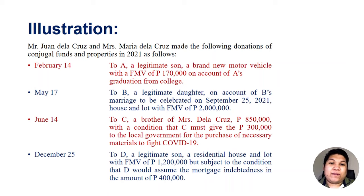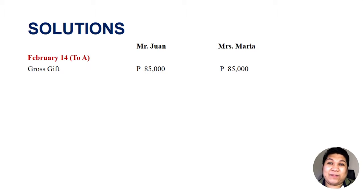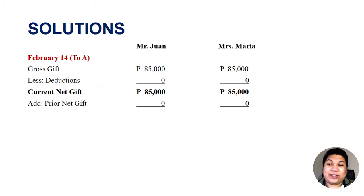We will solve this on a cumulative and transactional basis. Starting with the donation to A on February 14: the gross gift was P170,000, split by two — so Mr. Juan gets P85,000 and Mrs. Maria gets P85,000. There was no deduction, so the current net gift is P85,000 each. There was no prior net gift since this is the first donation of 2021, giving a total net gift of P85,000. The exemption threshold of P250,000 is higher than the net gift, so there was no taxable gift.